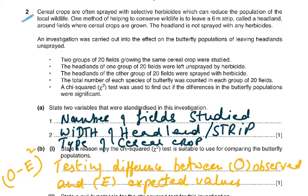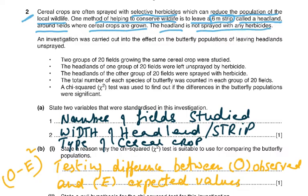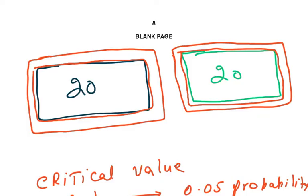Let's read question 2 carefully. Cereal crops are often sprayed with selective herbicides which can reduce the population of local wildlife. One method of helping to conserve wildlife is to leave a 6-meter strip called a headland around the fields where cereal crops are grown, and the headland is not sprayed with any herbicide.